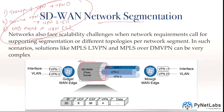Networks also face scalability challenges. When network requirements call for supporting segmentation or different topologies per network segment, solutions like MPLS Layer 3 VPN or MPLS over DMVPN can be complex. But by default, your SD-WAN fabric supports segmentation, allowing you to configure multiple VPNs according to your requirements.